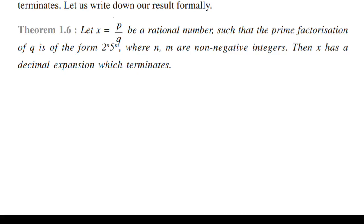This means: if your denominator is of the form 2ᵐ × 5ⁿ, where m and n are 0 or greater than 0, then the decimal expansion of that number will be terminating.